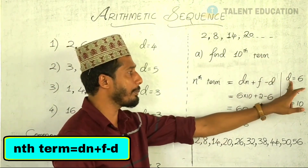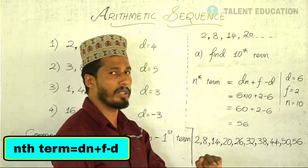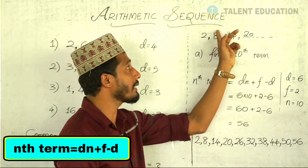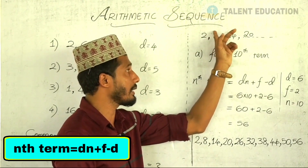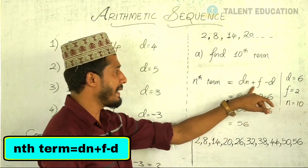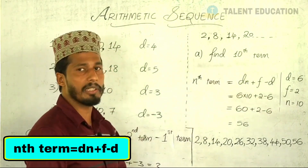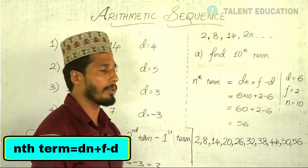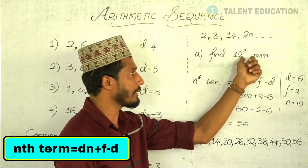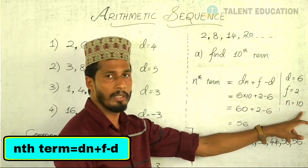What we call D is a common difference. It's a common difference. We can use D to say that. What we call N is a common difference. What's the term? 10th at the same time. Number or 4. What is the term?